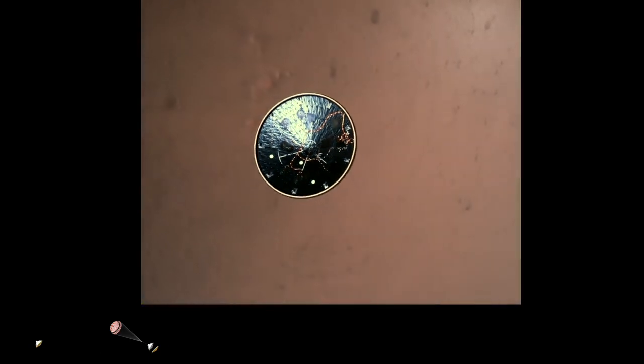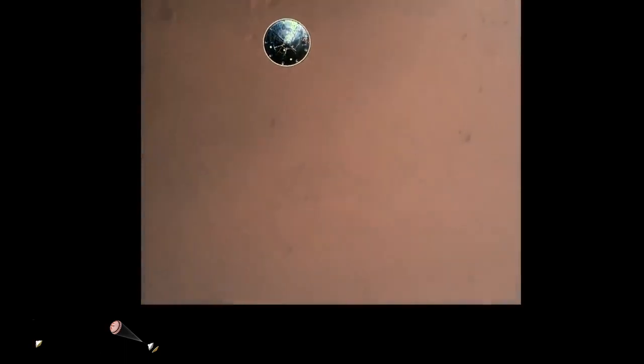Heat shield separated. Perseverance has now slowed to subsonic speeds, and the heat shield has been separated. This allows both the radar and the cameras to get their first look at the surface. Current velocity is 145 meters per second at an altitude of about 9.5 kilometers above the surface.